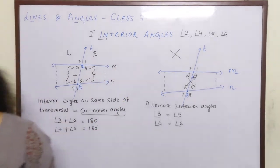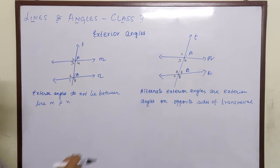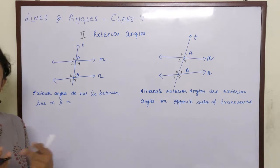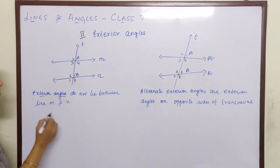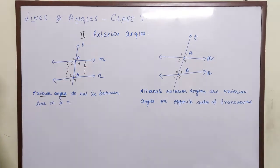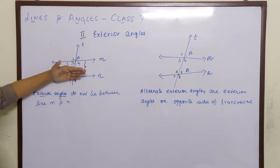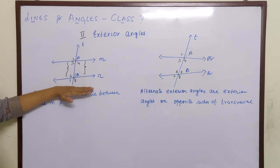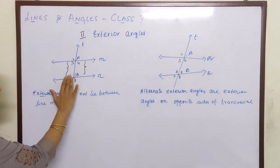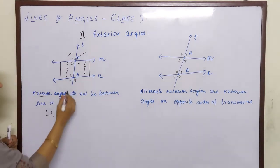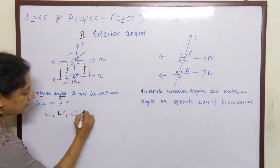The next type of angles is exterior angles. Interior angles lie between M and N, so exterior angles do not lie between them. Exterior angles are angle 1, angle 2, angle 7 and angle 8. Angle 1 and angle 2 lie above line M, and angle 7 and angle 8 lie below line N. They are not inside the box, so they are called exterior angles.